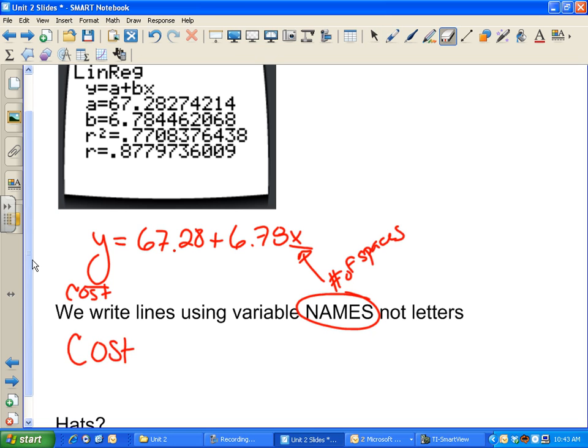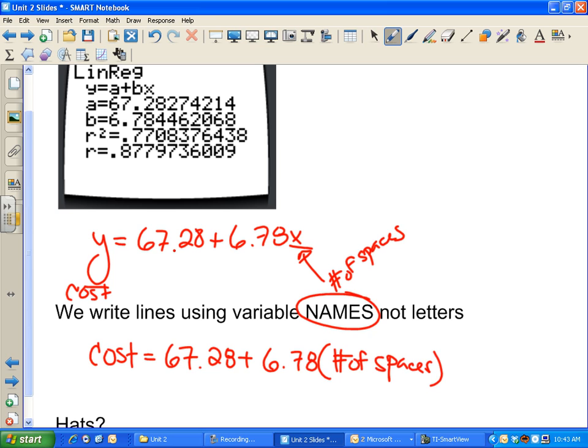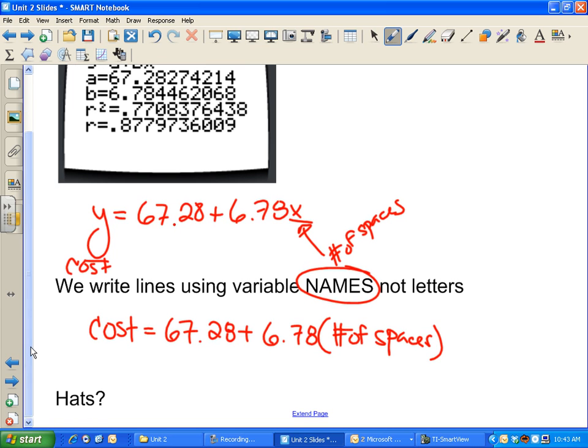So I would just write it this way. Cost equals 67.28 plus 6.78 times the number of spaces. Wow. This suddenly is a much more powerful equation. I can figure out what we're talking about just from reading it. But sadly, this is still not an A plus answer.